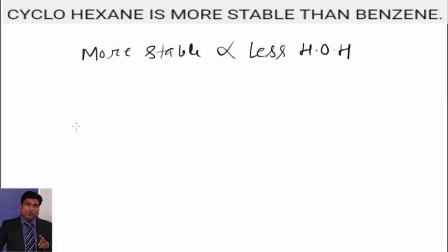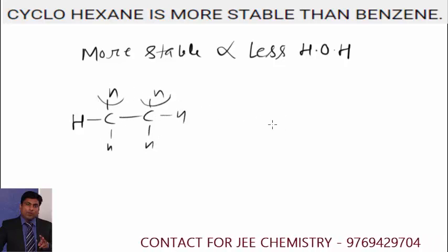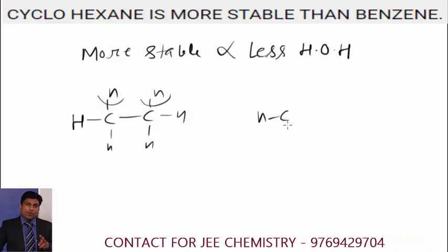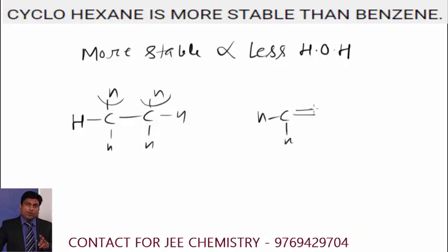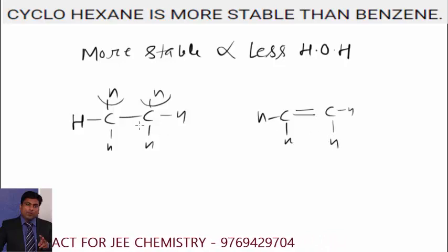Consider ethane. Now if you want to write a pi bond, you need to remove two hydrogen atoms from here. So basically, to write one pi bond, you have removed two sigma bonds.